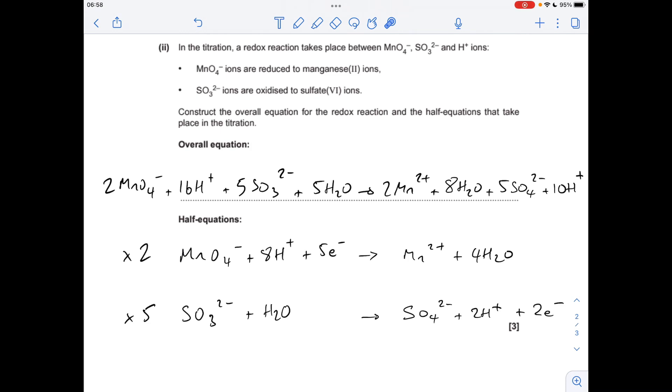We can't leave it like this because we've got like terms left and right. So we've got 16 H+ on the left, 10 on the right. So the 10 on the right will go, and this will go down to 6. We've also got H2O left and right, so we've got 5 on the left, 8 on the right. So obviously they're going to go, and that'll go to 3. So that's the overall equation.